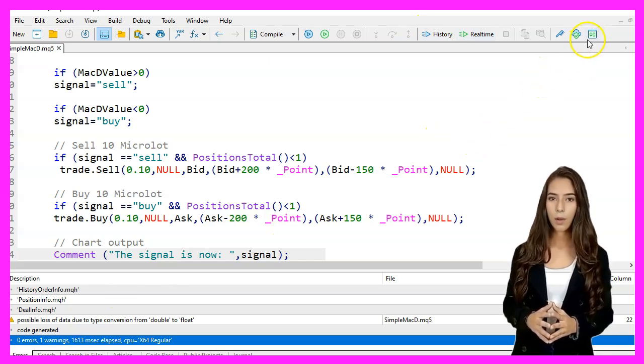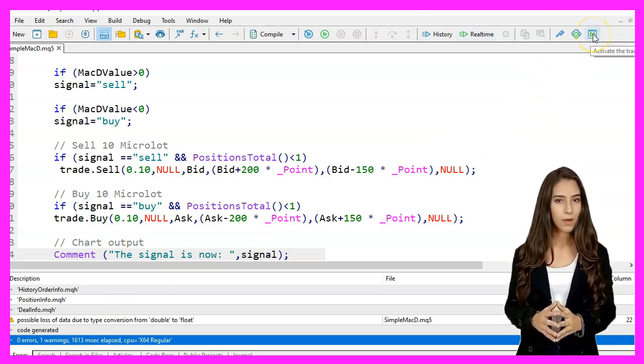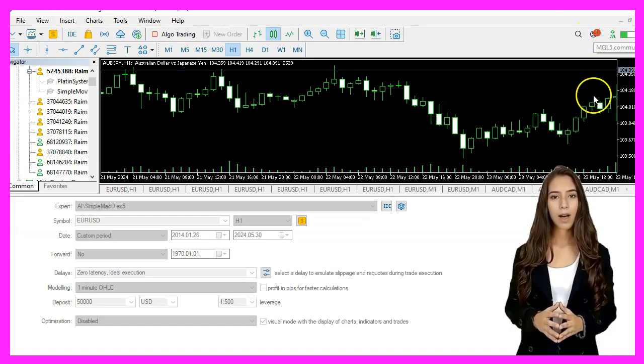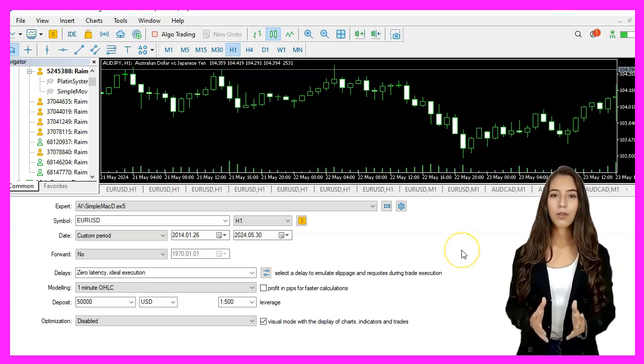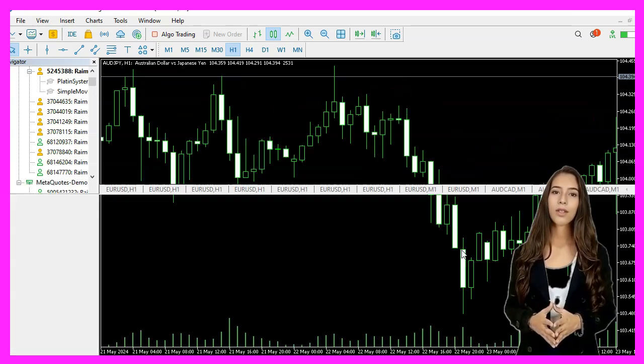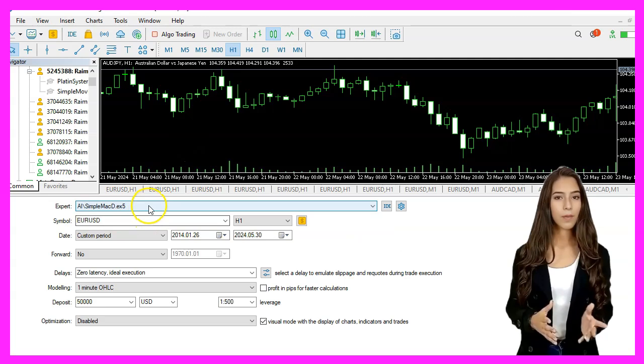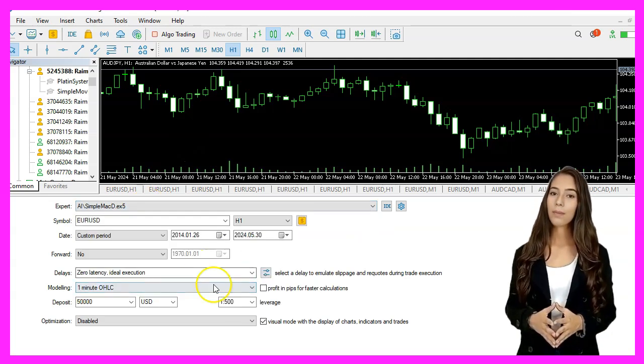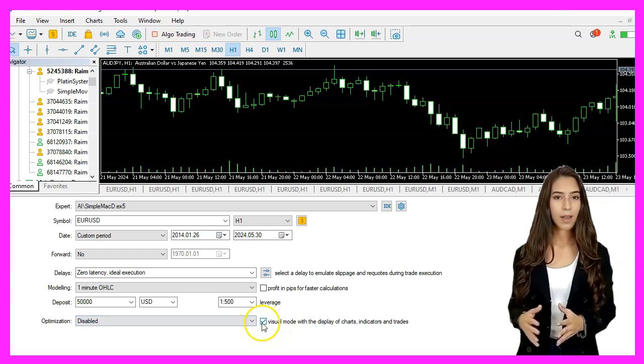If the compilation works, we go back to MetaTrader by pressing F4 or clicking on the icon. Back in MetaTrader, we press Ctrl and R to start the Strategy Tester. Pick the Expert Advisor that we have just created, enable the Visual Mode, and start a Strategy Test.